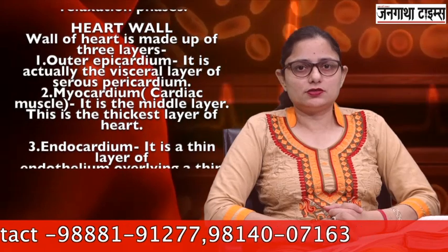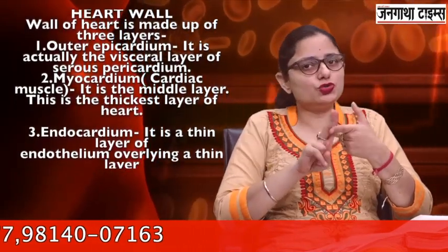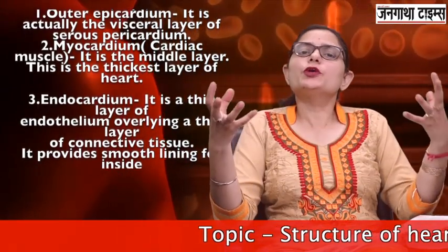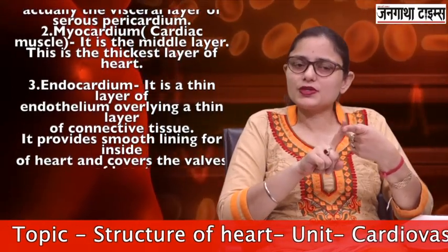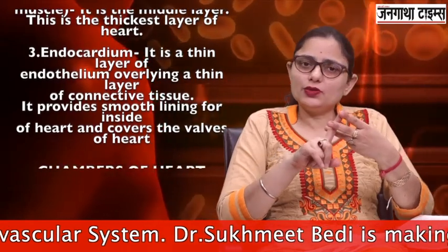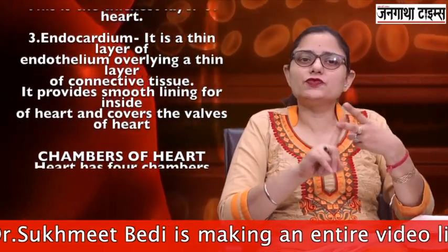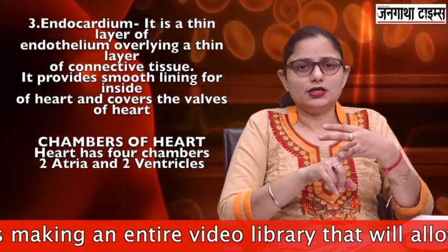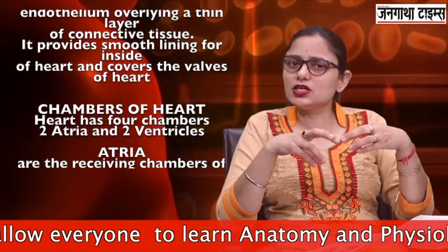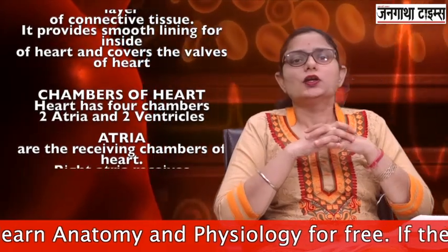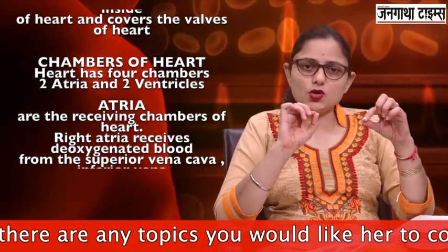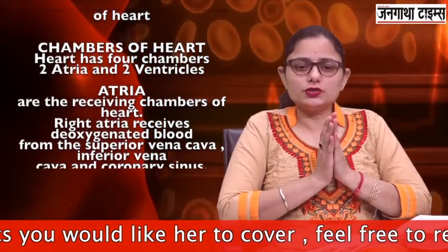Next are the chambers of the heart. There are four chambers: two atria and two ventricles. Atria are called the receiving chambers because they receive the blood. The right atrium receives deoxygenated blood from all parts of the body via three main veins: the superior vena cava, the inferior vena cava, and the coronary sinus. The left atrium receives oxygenated blood from the lungs. The inner lining of both atria is smooth, except for some muscular ridges called musculi pectinati or pectinate muscles.